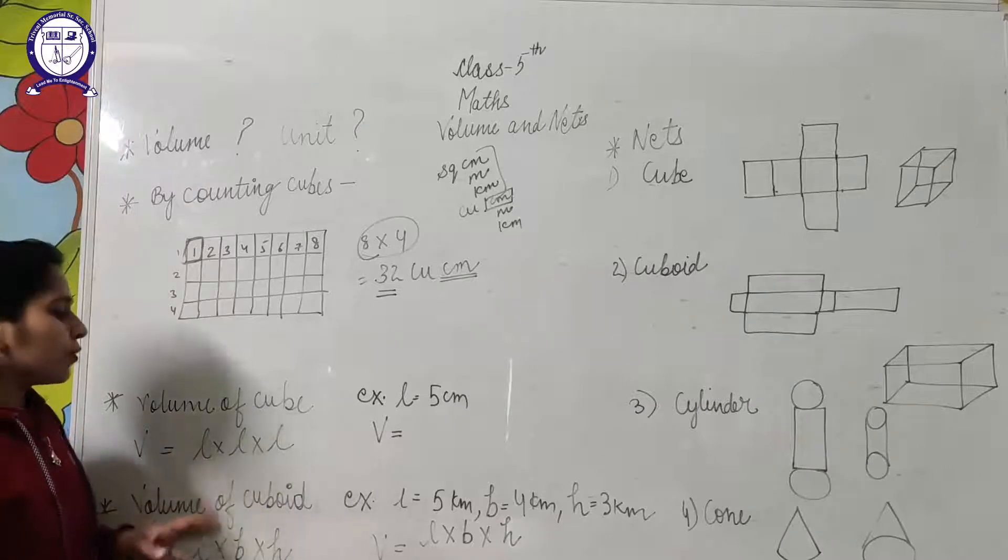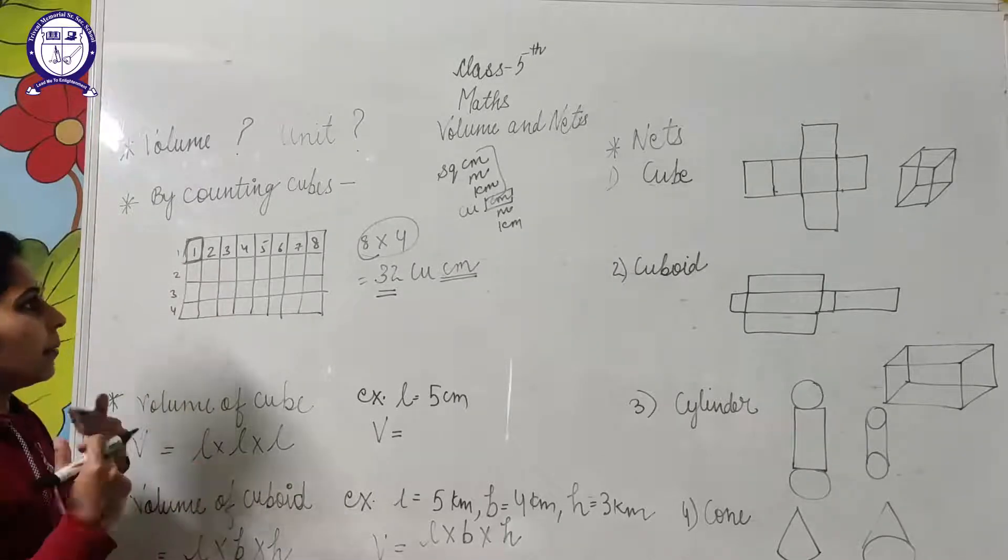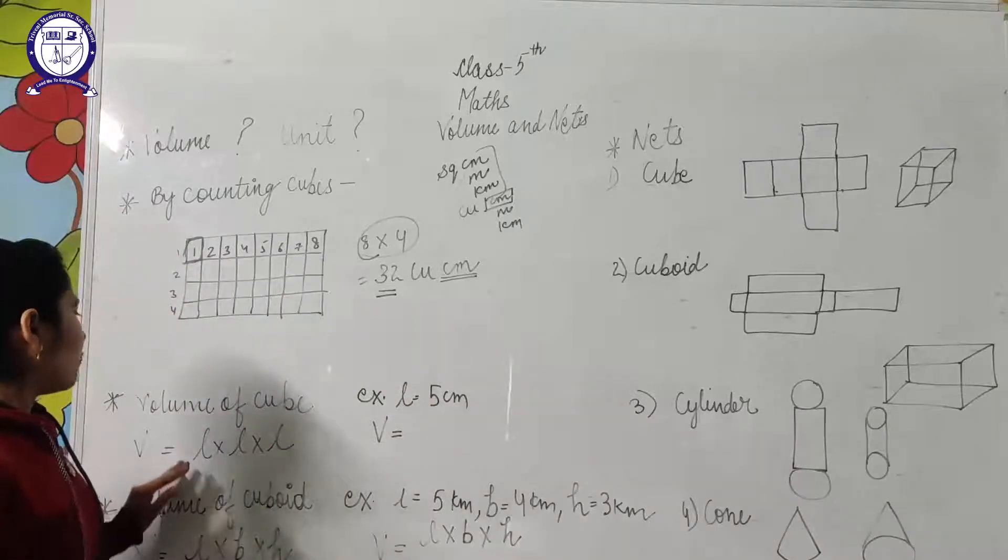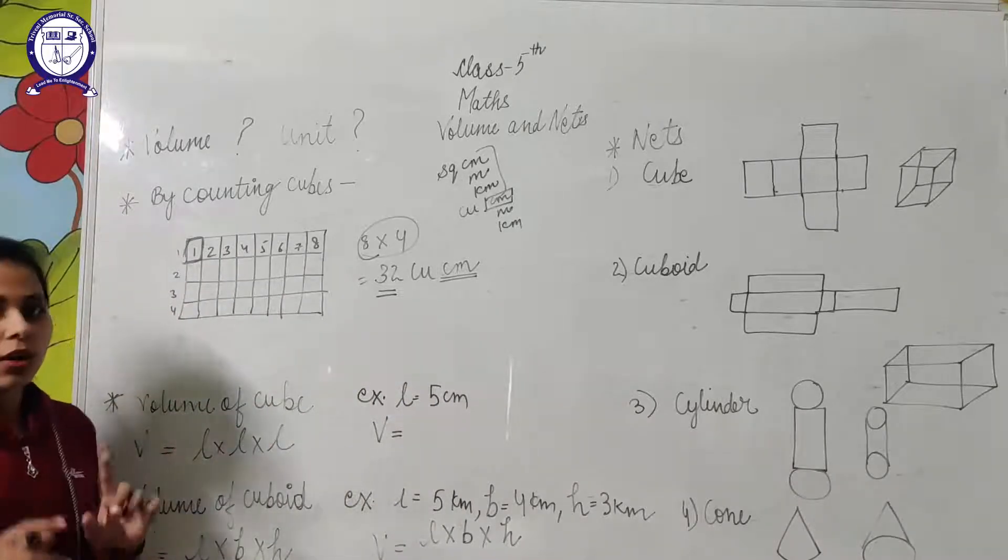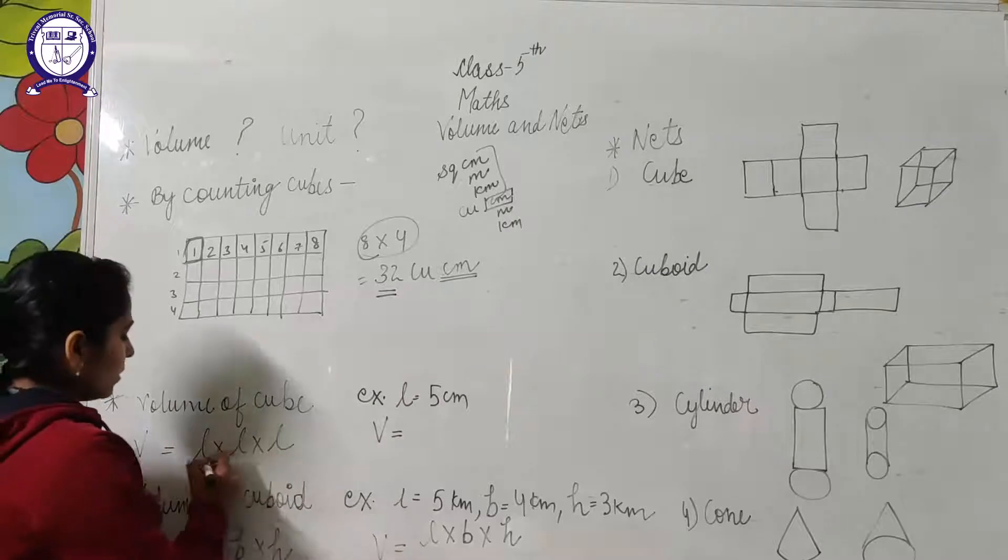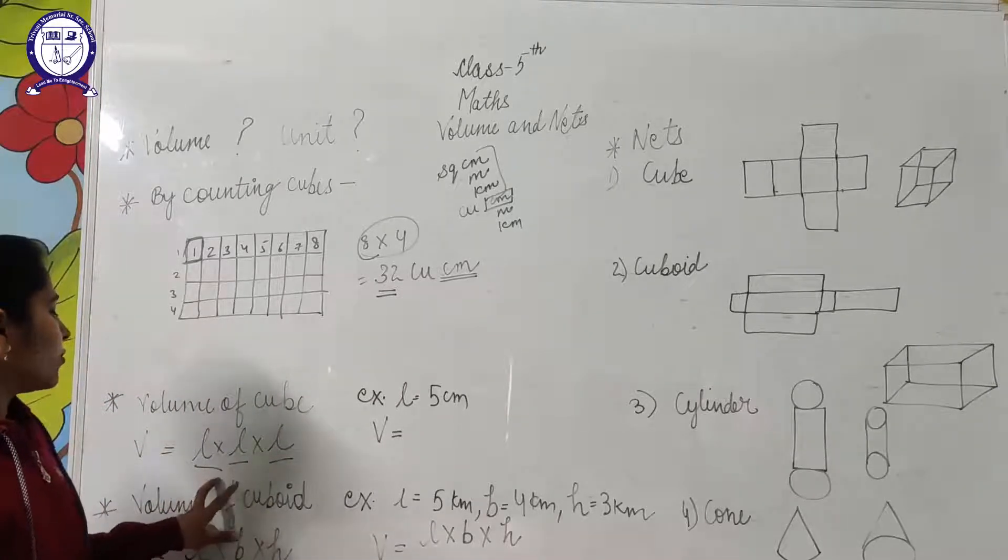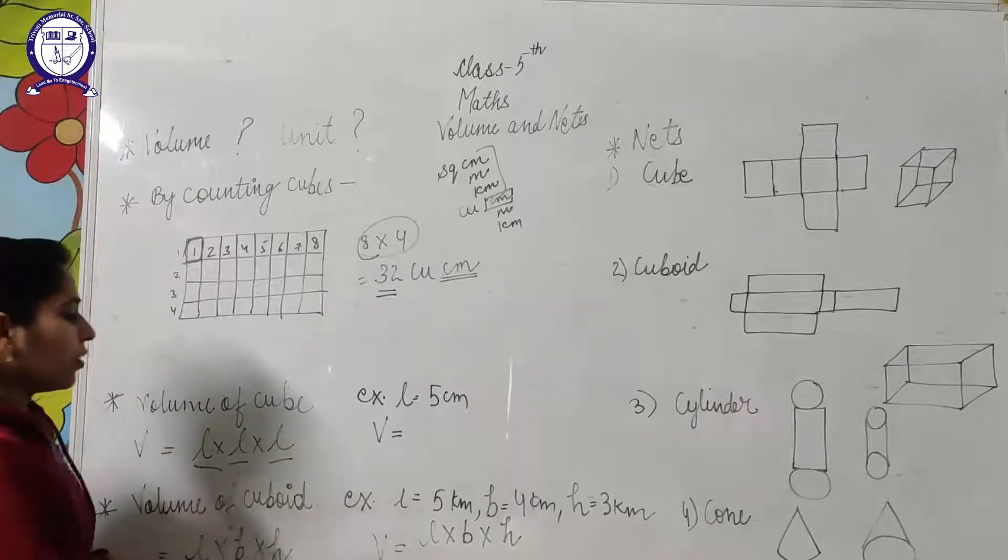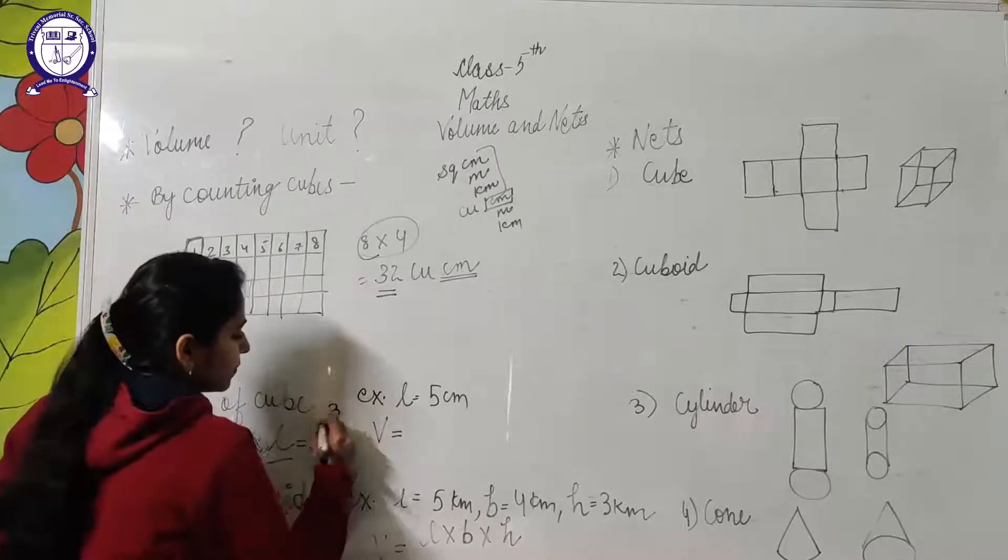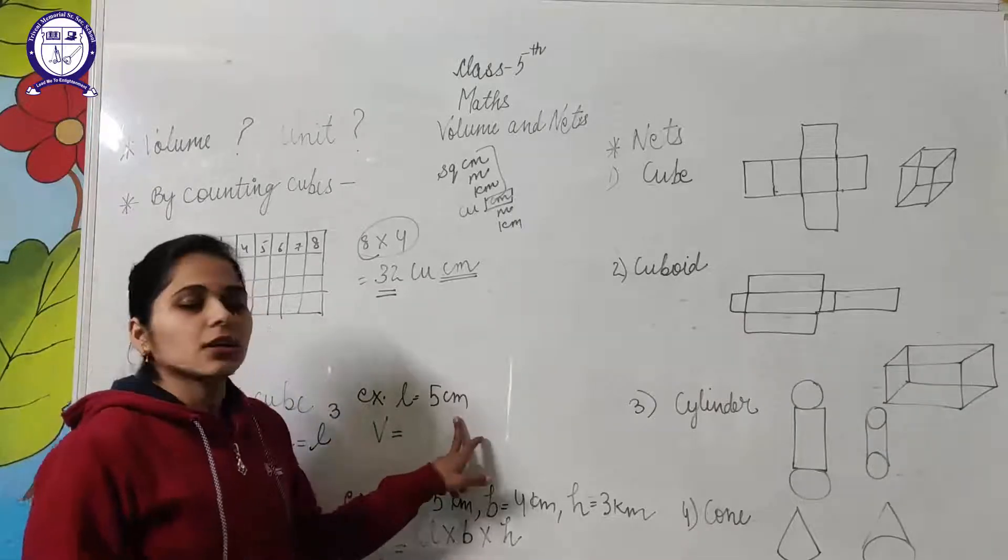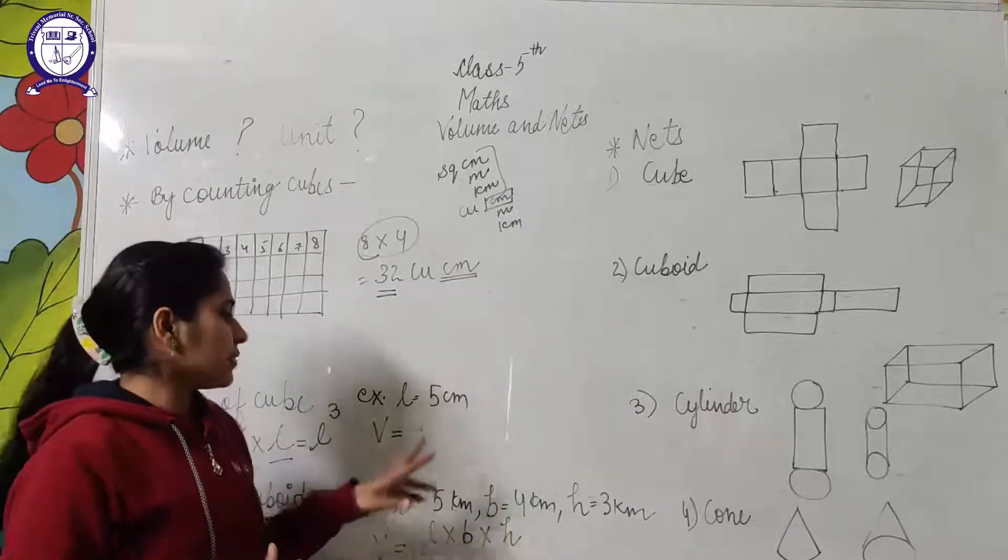Now volume of cube and cuboid we will study in this grade. Cylinder and cone we will study in further classes. For the cube, we have equal length. So volume will be length multiplied by length multiplied by length. We can use side cubed or length cubed. This will be more clear with an example.